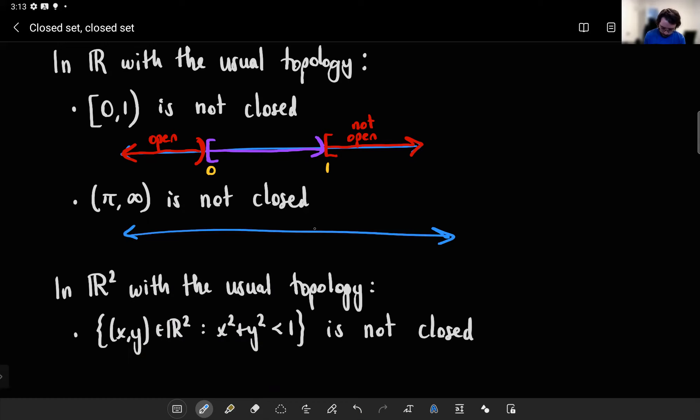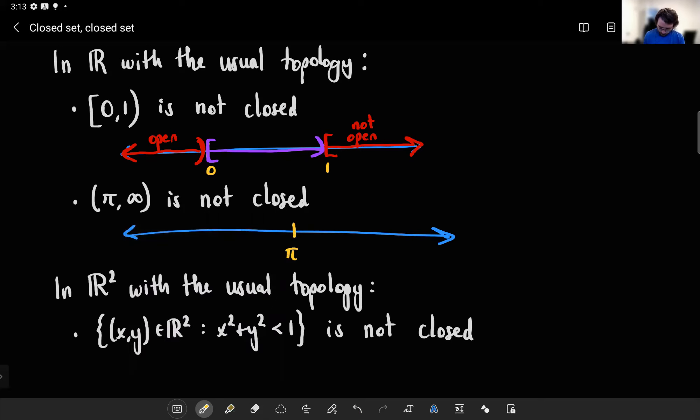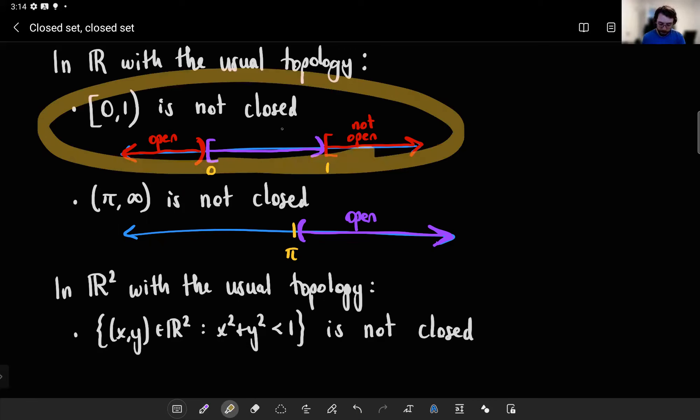Similarly, if I took some interval here, I said π to infinity. We of course know that that's not closed because, well, you want to say it's not closed because it's open, right? And that's like almost true. Yeah, I mean it is an open set. But again, you have to keep in mind, open and closed are not antonyms. They're not the opposite of one another. We already saw examples where certain sets were clopen or certain sets were neither closed nor open. In fact, this is neither closed nor open.